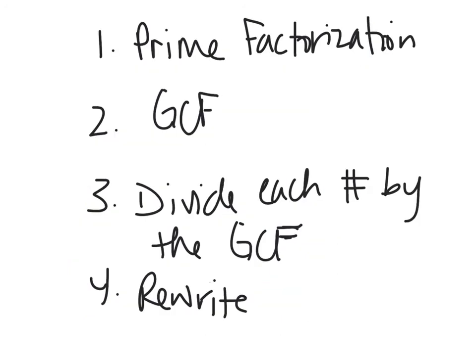As a quick review: Step 1 is to find the prime factorization of each number. Step 2 is to identify the GCF between the two numbers. Step 3 is to divide each number by the GCF. Step 4 is to rewrite the sum — in our examples, 16 plus 28 and 24 plus 40 — using the distributive property in both factored form and expanded form.